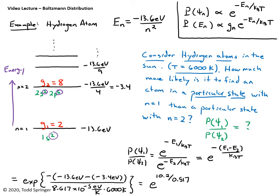Plugging in the numbers: E1 is minus 13.6 eV and E2 is minus 3.4 eV. Be careful with units — use the Boltzmann constant in eV so that eV and Kelvin both cancel, leaving a dimensionless exponent. The result is a very large number, confirming it is much more likely to find an atom in the ground state than the first excited state, even at temperatures of 6000 Kelvin on the Sun.